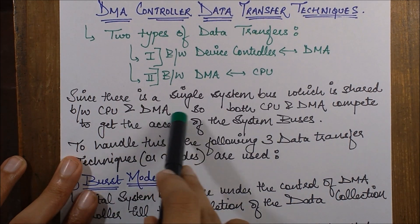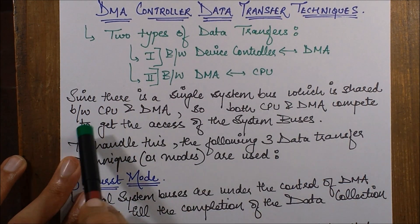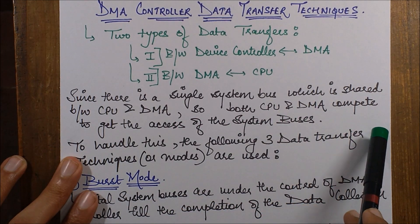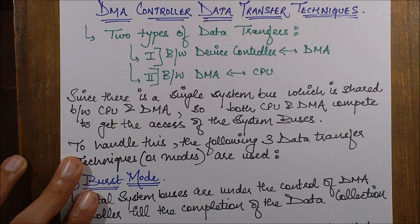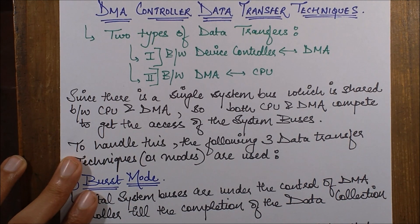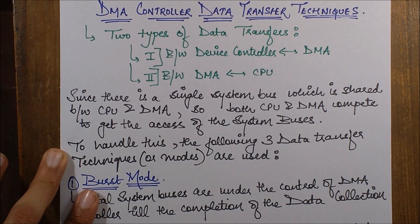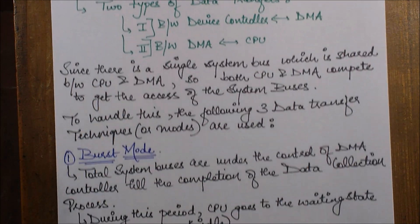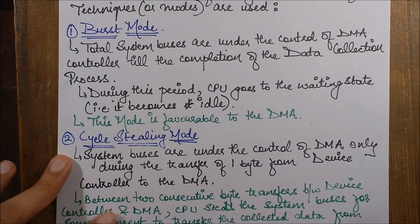Now since there is a single system bus which is shared between the CPU and the DMA, both CPU and DMA compete to get access to those system buses. To handle this, the following three data transfer modes are used. The first mode is burst mode.